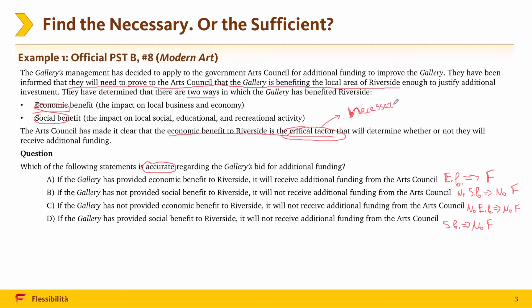Critical factor is the necessary condition, and necessary condition means that lack of the necessary condition brings lack of result. In other words, no economic benefit means no funding. And this is exactly what option C is saying, so option C is right.